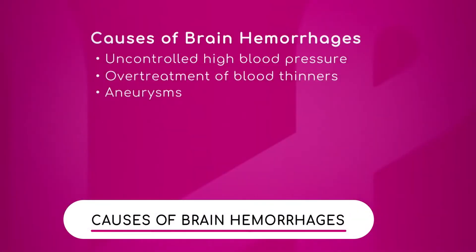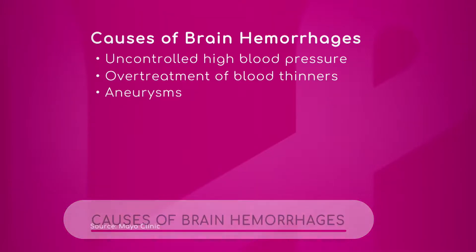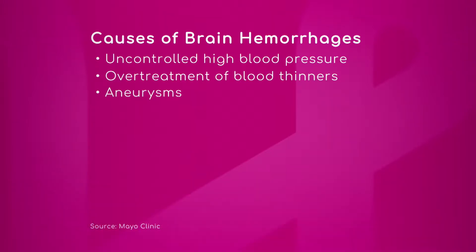Causes of brain hemorrhages — let's take that real quick and just remind our viewers quickly what they are. There are three of them: uncontrolled high blood pressure, overtreatment of blood thinners, and aneurysms. How common are these hemorrhagic strokes?